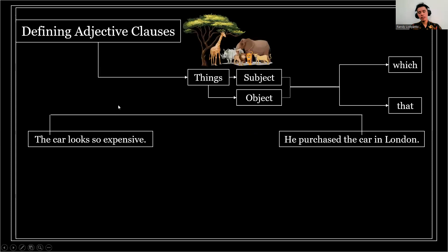Now we talk about things. Previously we talked about persons; now we talk about things. For subject and object, if you want to replace the subject or object of a sentence about a thing to combine it using adjective clauses, we do not need to differentiate whether the thing is a subject or an object in choosing the relative pronoun, because the relative pronoun used to replace the subject and the object for things is the same: we can use 'which' or 'that.'